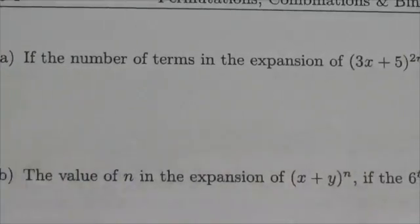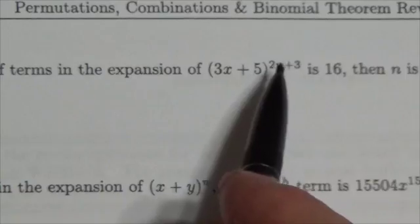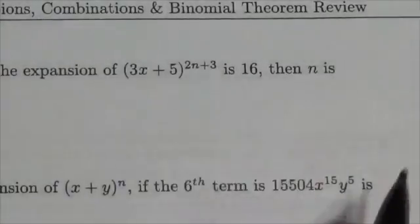This first question: if the number of terms in the expansion of (3x+5)^(2n+3) is 16, then what's n?